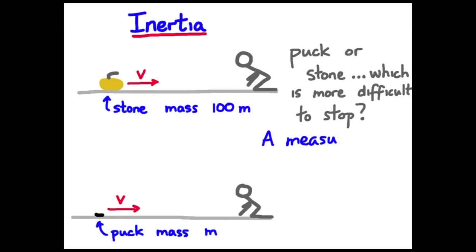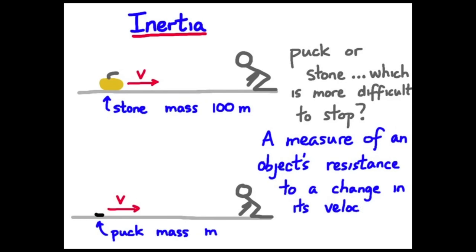So this is inertia. A measure of the object's resistance to a change in its velocity. So back to the question, which one's most difficult to stop, the curling stone or the puck? I think you'd likely predict that it's the stone that's more difficult to stop. And the stone is more difficult to stop because it has more inertia. It is 100 times the mass of the puck. It has 100 times the inertia of the puck.